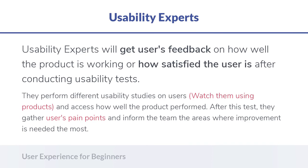Usability experts get user feedback by watching users actually use the product. They give users a chance to perform different tasks, then observe and note all the problems encountered. This is how they identify the user's pain points and determine how the product can be improved. In the end, they prepare a usability report.